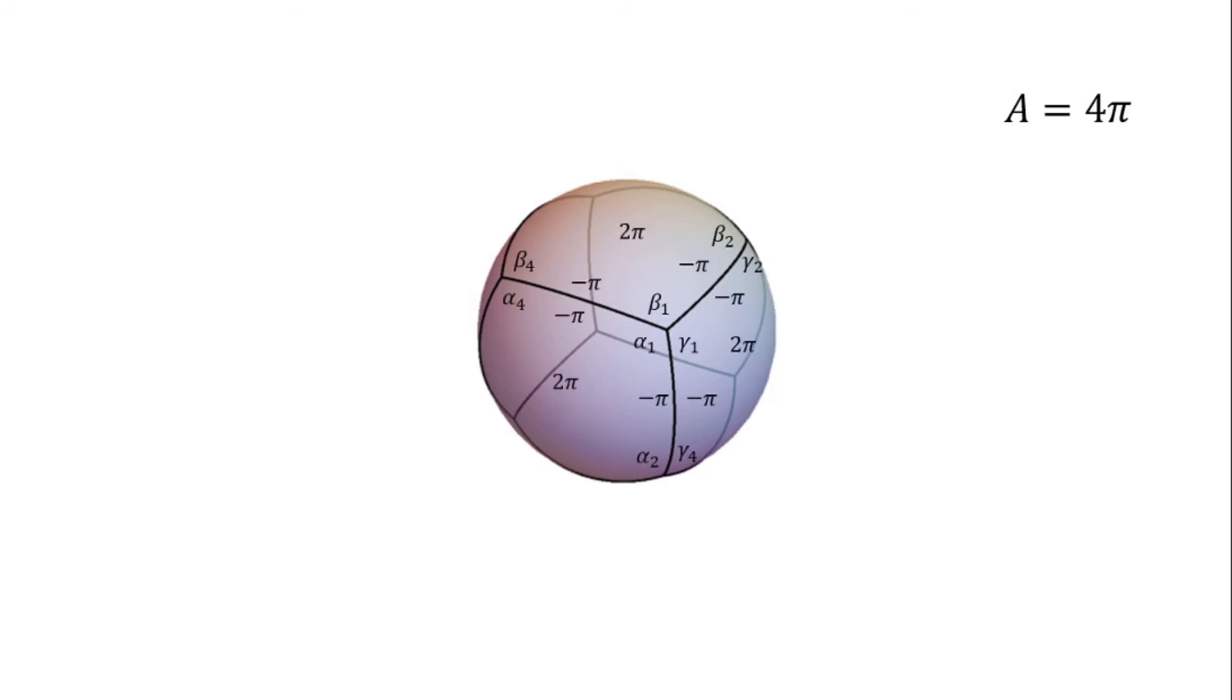Now back to computing the area. Using the contribution of each part to the area, the sum of the individual areas is easy to compute. Around each vertex, the angles form a full angle, that is, 2 pi radians. And there are only v vertices, so their contribution to the area is 2 pi times v.